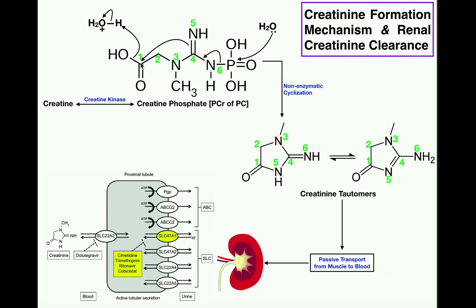This creates a five-membered ring containing five atoms: position one is a carbon with a carbonyl, position two is a carbon, position three is a methylated nitrogen, position four has two nitrogens bound, and position five is the nitrogen now bonded to carbon one. This molecule is one form of creatinine. It's worth noting that creatinine can tautomerize, shifting the double bond from positions four–six to positions four–five, giving two equally valid tautomers.